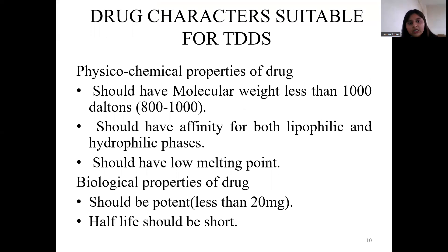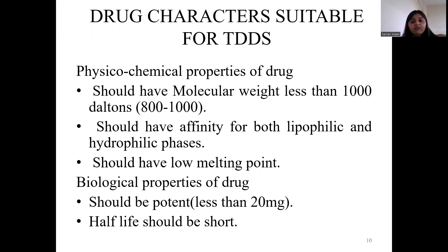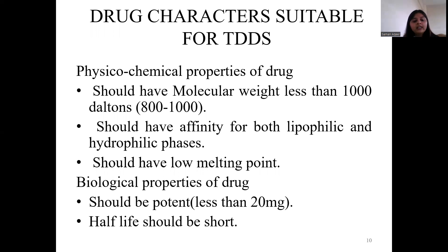These are the drug characteristics suitable for transdermal drug delivery system. Regarding physico-chemical properties: the drug should have a molecular weight less than 1,000 daltons, ideally between 800 to 1,000 daltons. It should have affinity for both lipophilic and hydrophilic phases, and should have a low melting point. Biologically, the drug should be potent — less than 20 mg — and have a short half-life.